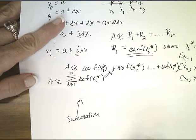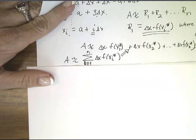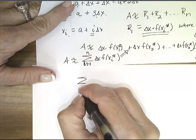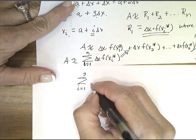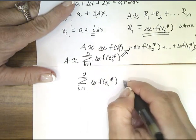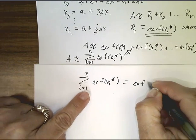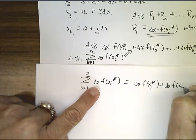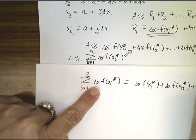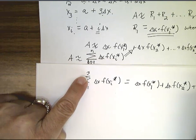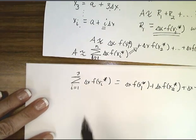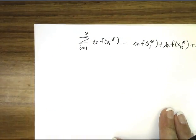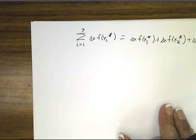The sigma notation can be scary, so let's look at a quick expansion. If we sum from i = 1 to 3 of delta x · f(x_i*), that expands to: delta x · f(x₁*) + delta x · f(x₂*) + delta x · f(x₃*), and we stop because we're only summing from i = 1 up to 3.